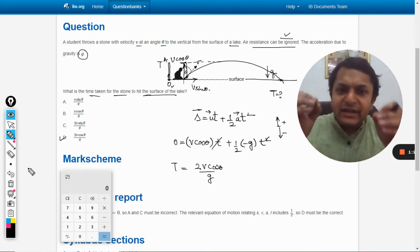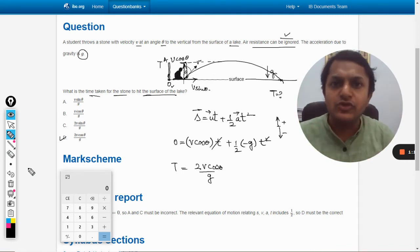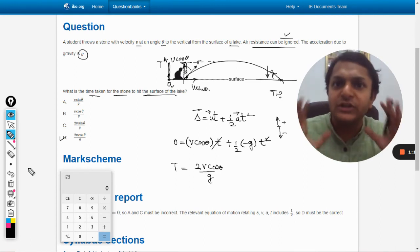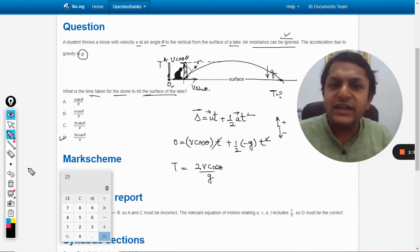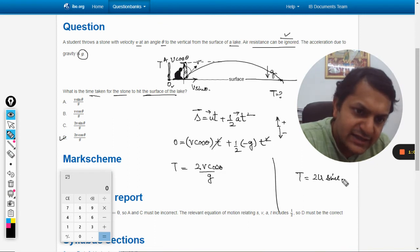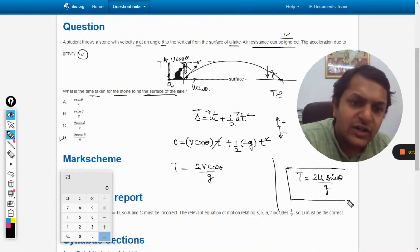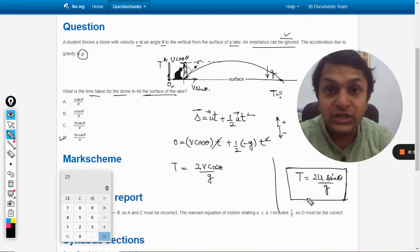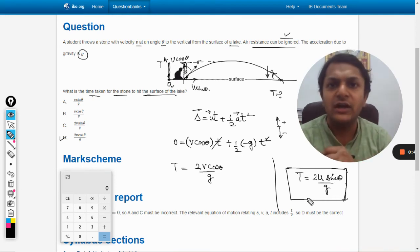This is the complete derivation that I am giving you for the projectile motion, which we do generally when theta is given with the horizontal. Here the theta is given with the vertical—that is the only difference. The other thing that we can do is we can take t = 2u sin theta / g. Now this is a general formula which is given in our books, and students are supposed to learn this formula so that directly they can apply this and get the answer.